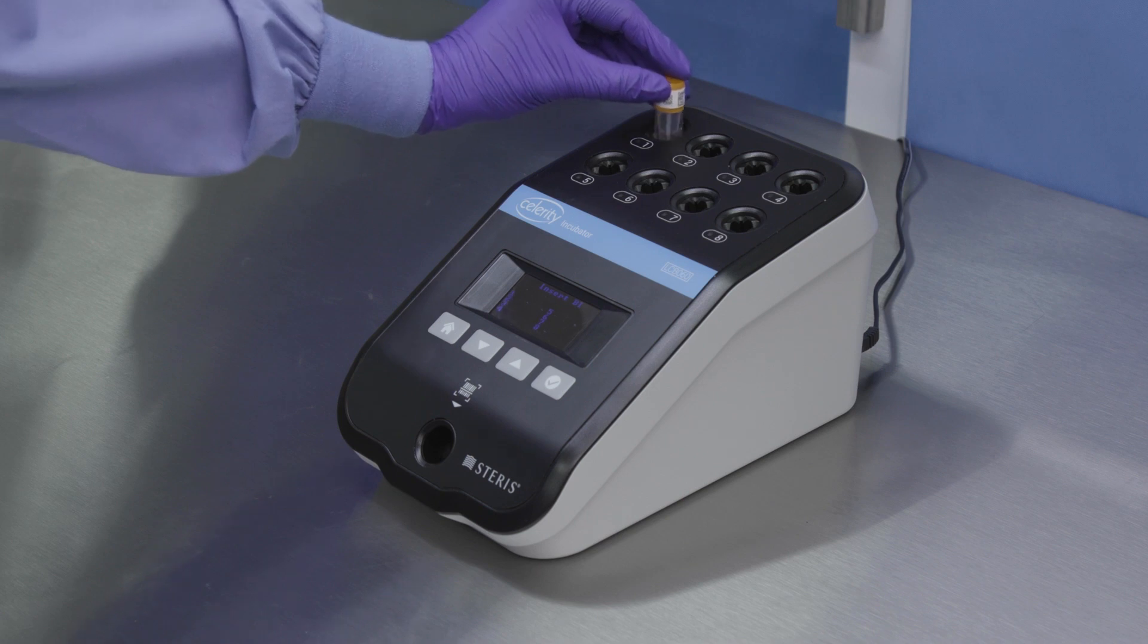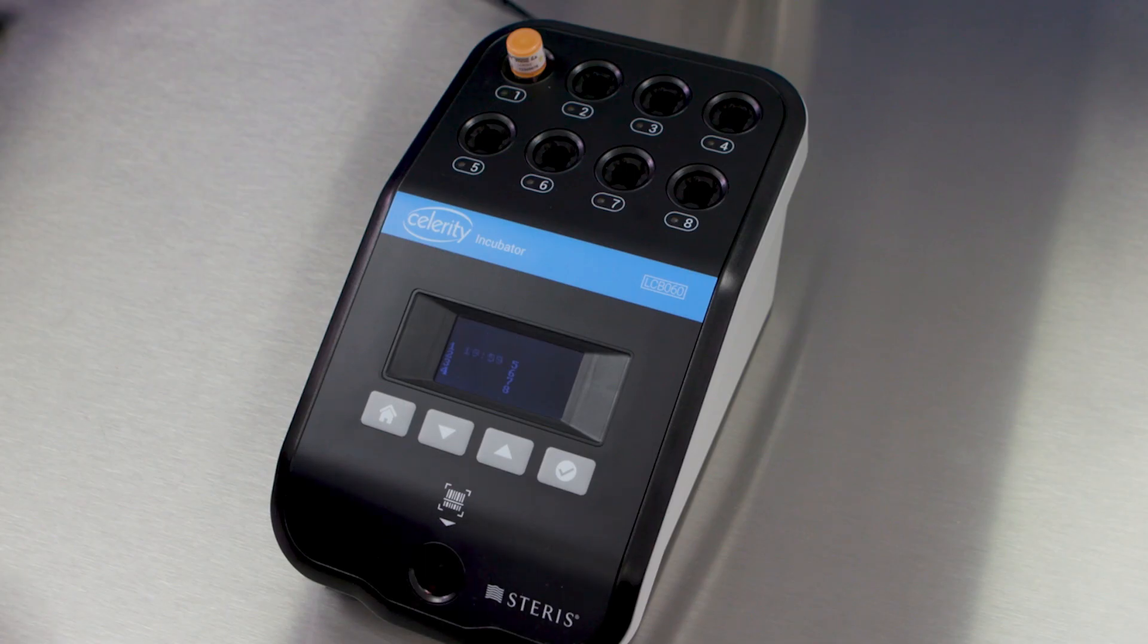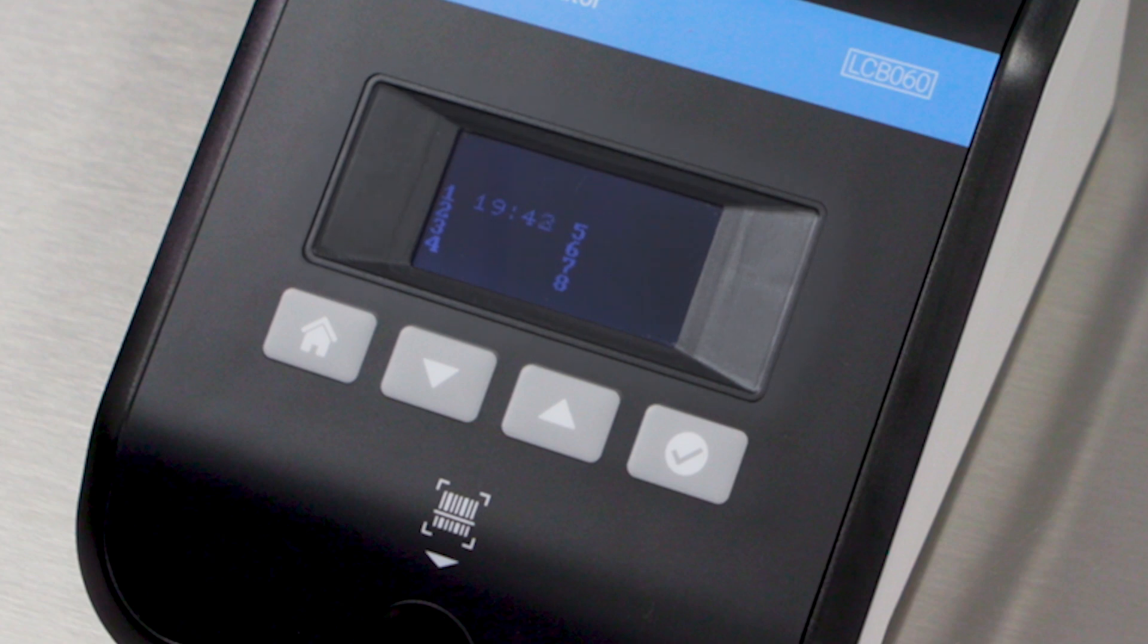Place the activated BI in any available well. The incubator will automatically detect and begin reading the BI. The corresponding slow flashing green light indicates the well is in use, and the remaining incubation time is displayed on the screen next to the corresponding well number.